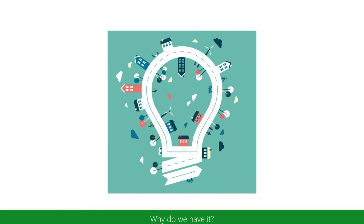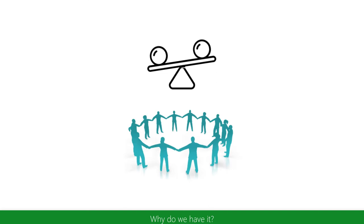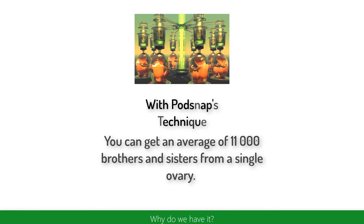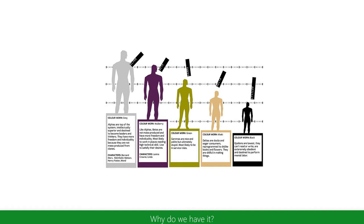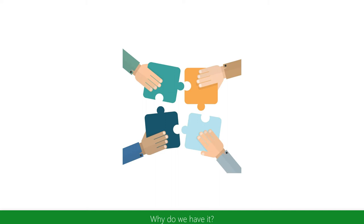The Bokanovsky's Process is a true innovation of our civilization and is paramount in creating the unprecedented social stability we have today. When combined with Podsnap's technique to speed up the maturation of embryos, it enables the essential caste system where the lower castes do the work they were born for and everybody's happy. With each Bokanovsky group working together on a single task they were designed for, our society achieves a level of efficiency never before seen. The whole of a small factory can be staffed by the people from a single Bokanovsky egg.